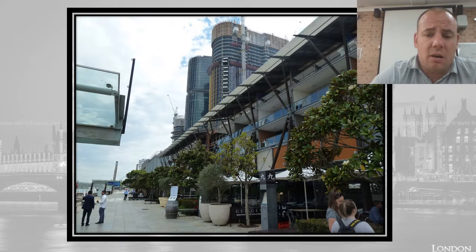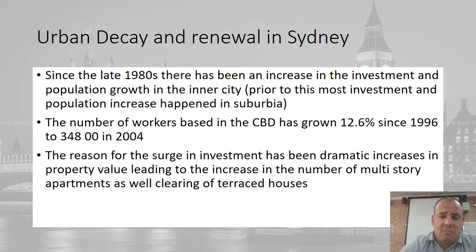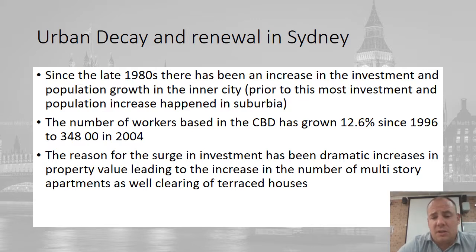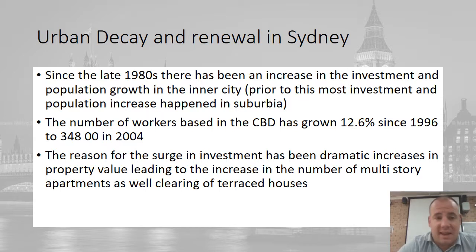This is Darling Harbour — you can see apartments with restaurants underneath. Since the late 1980s there's been an increase in investment and population in the city, because younger professional people want somewhere to live rather than commute from the suburbs. Since 1996, the population in the CBD has increased by 12.6 percent, which has dramatically increased property values and led to multi-story apartments, as well as the clearing of terraced houses like those in the Rocks.